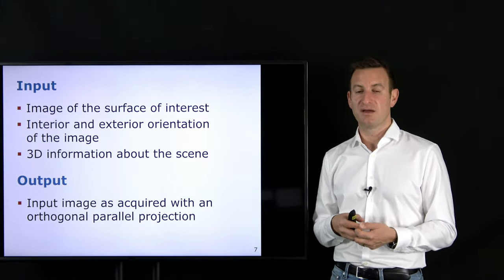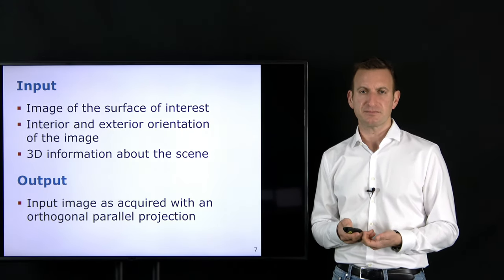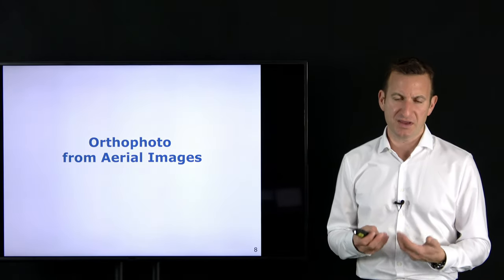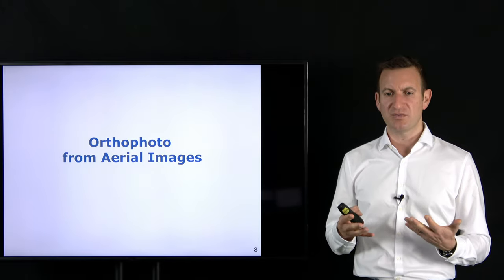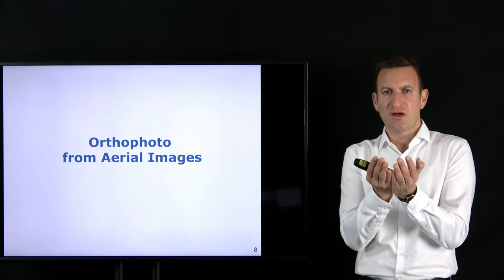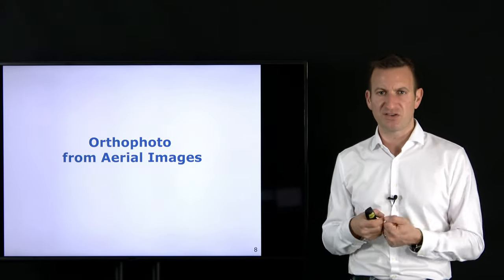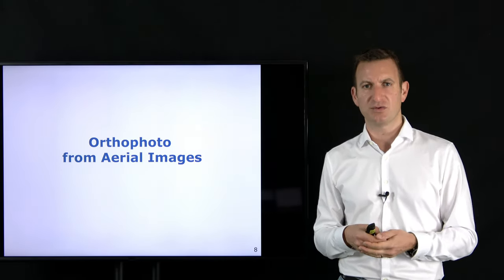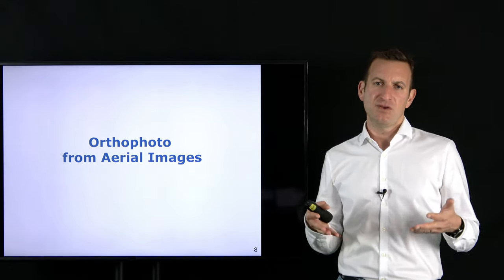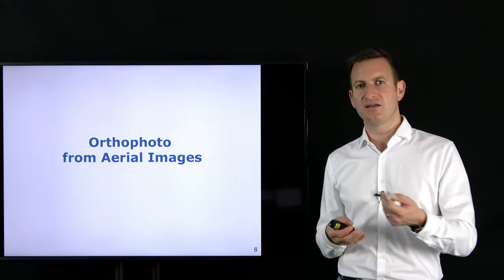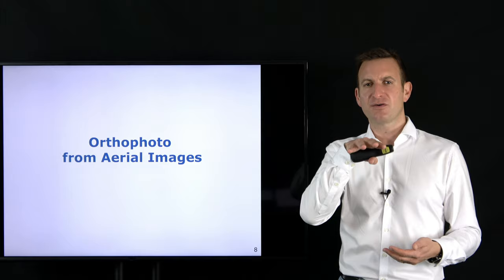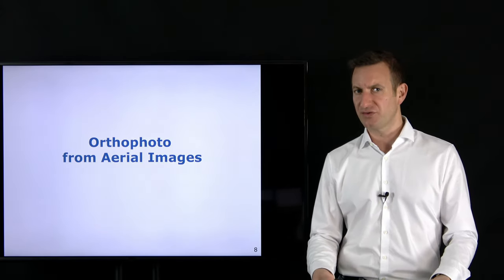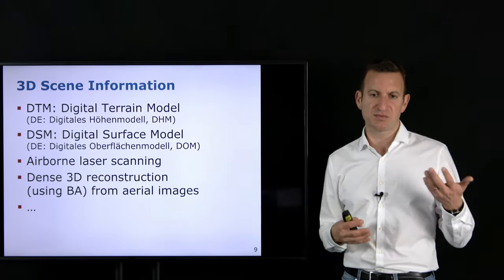We need to know how far every point we are seeing is away from some reference ground plane. If we have this information, we can turn the image into an orthophoto with orthogonal parallel projection. In practice, we calibrate the camera using Zhang's method as a pre-step, equip a UAV with GPS and IMU to get the extrinsics, and then obtain 3D structure of the world — which is probably the most difficult part.